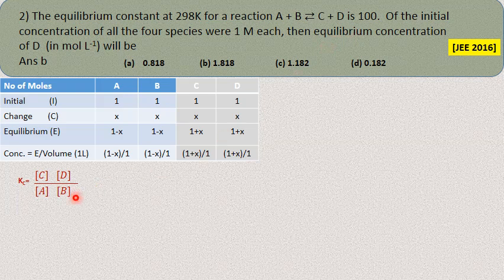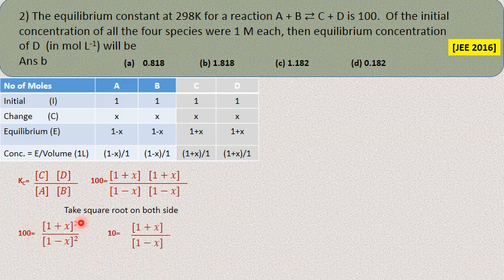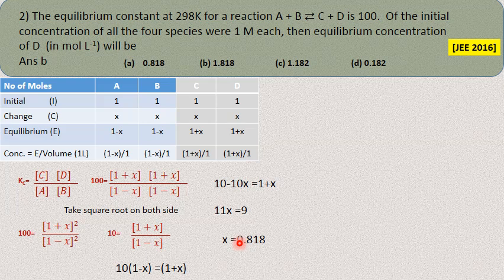Kc equals (1+x)(1+x) divided by (1-x)(1-x), which is (1+x)² / (1-x)². Kc = 100. Taking square root on both sides: √100 = 10 = (1+x)/(1-x). Solving: 10(1-x) = 1+x, so 10 - 10x = 1 + x, giving 11x = 9, so x = 9/11 = 0.818.